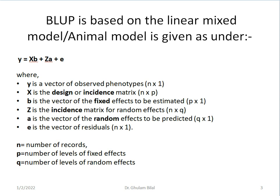Here, n is the number of records. If we have 100 records, it would be 100. P is the number of levels of fixed effects. For example, if we have fixed effect of sex, male and female, P would be 2. Q is number of levels of random effects. It is equal to the number of animals which we are using for estimating their effects.